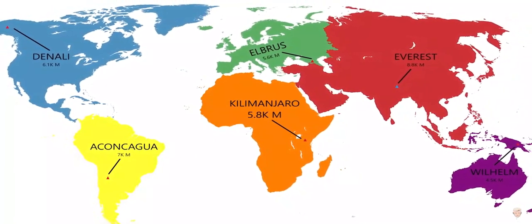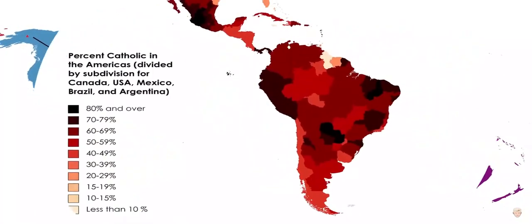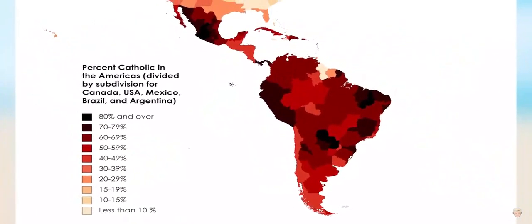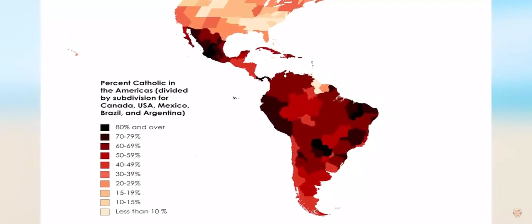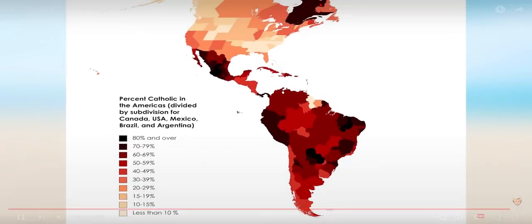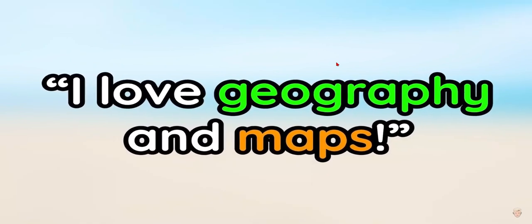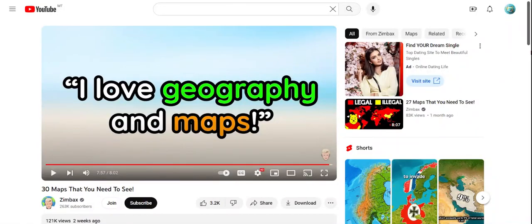And this very last map shows the percentage of Catholic people in the Americas. Probably because of, you know, different colonial influences. This is such an empty zone from the United Kingdom area — but Mexico, Peru, Paraguay, and some parts of Brazil are very Catholic. Oh yeah, even Canada up there. Well, if you're still here, comment 'I love geography and maps.'